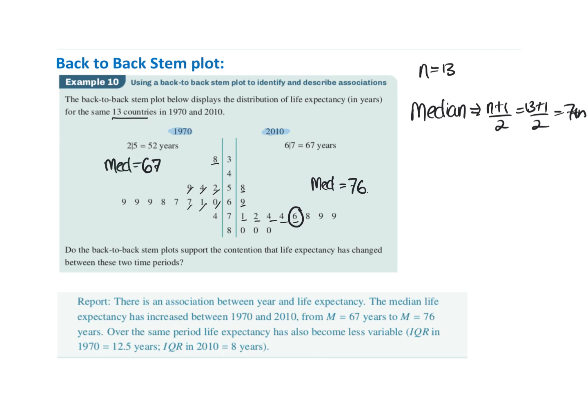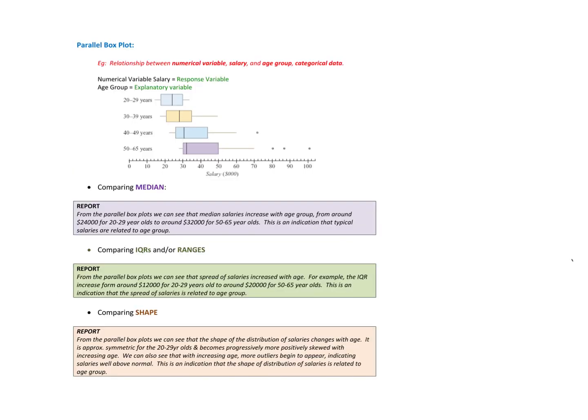So once again, the median increased as we went from this year. So from 1970 to 2010, I'm going to say there is an association between year and life expectancy. As we see, the median life expectancy has increased from 1970, which was 67 years, to 76 in 2010. So once again, you only really have to say one of them.